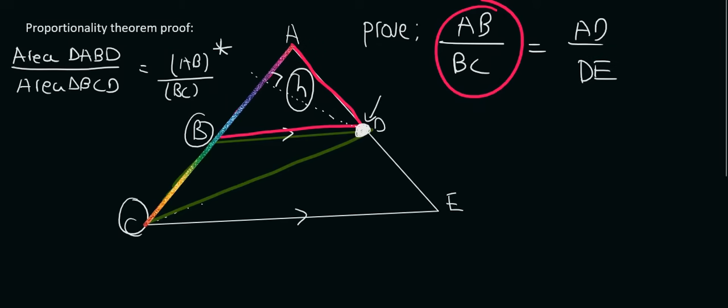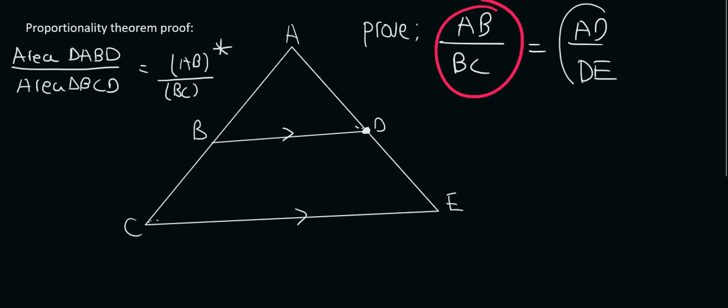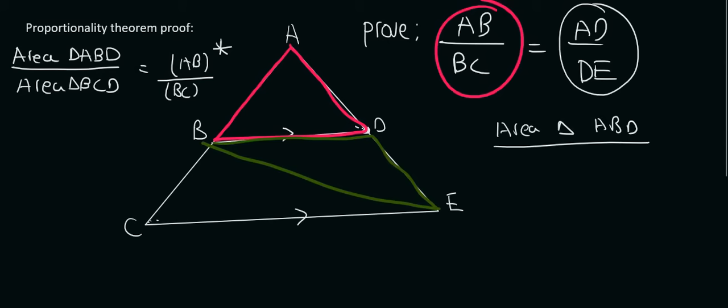Now the next thing we need to look at is AD over DE. So we're going to do that with areas as well. The problem is though, is that DE is not part of a triangle. So what we're going to have to do once again is something like this. We're going to go from E up to B. At least now we have formed a triangle that has AD, which is this triangle over here, and then DE, which is this triangle over here.